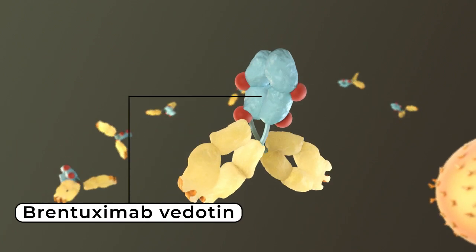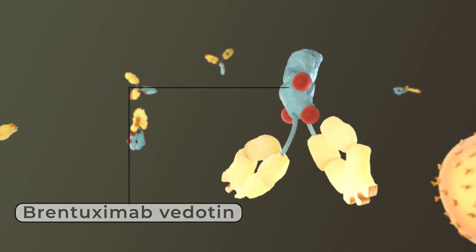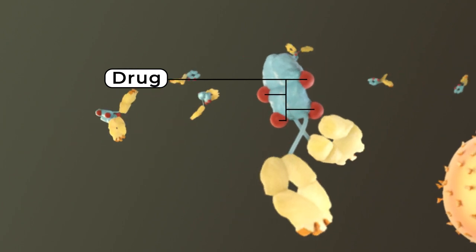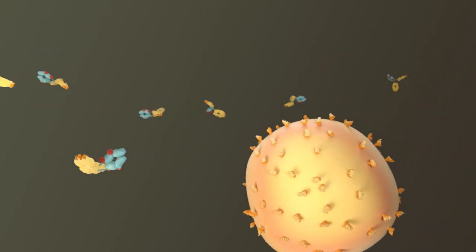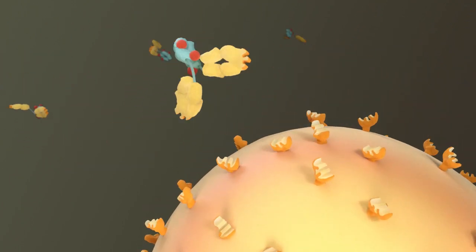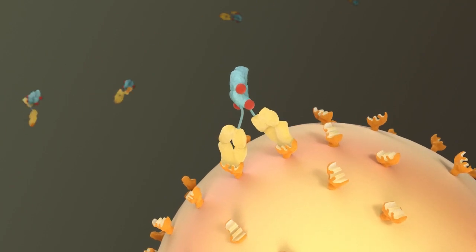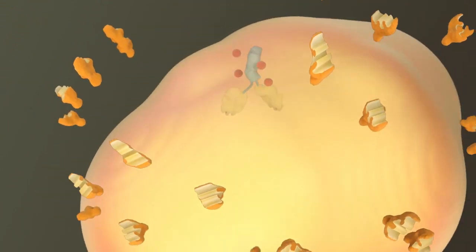For example, brentuximab vedotin is a monoclonal antibody that is linked to a chemotherapy drug. When the antibody attaches to its target on cancer cells, it delivers the chemotherapy drug, which kills them.